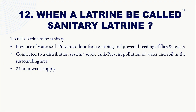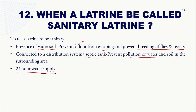For a latrine to be called sanitary, three criteria must be met: a water seal must be present to prevent odor from escaping and to prevent fly and insect breeding; the sewage must be connected to a sewage tank or proper distribution system to prevent water and soil pollution; and there must be a 24-hour water supply.